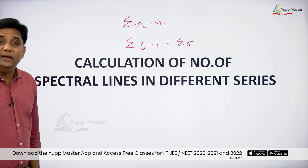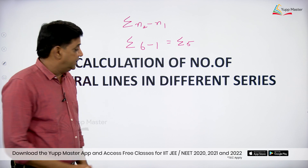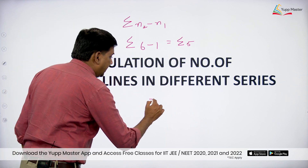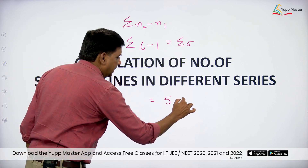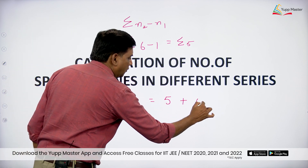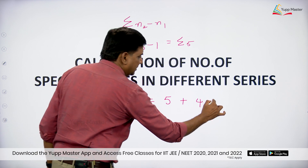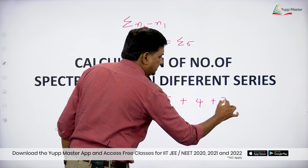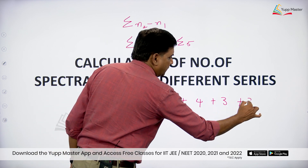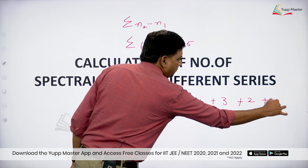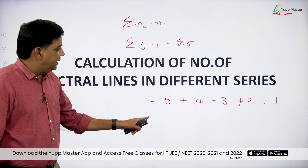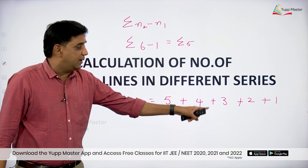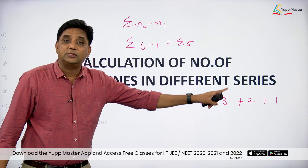Sigma 5 means summation — that means 5 plus 4 plus 3 plus 2 plus 1.